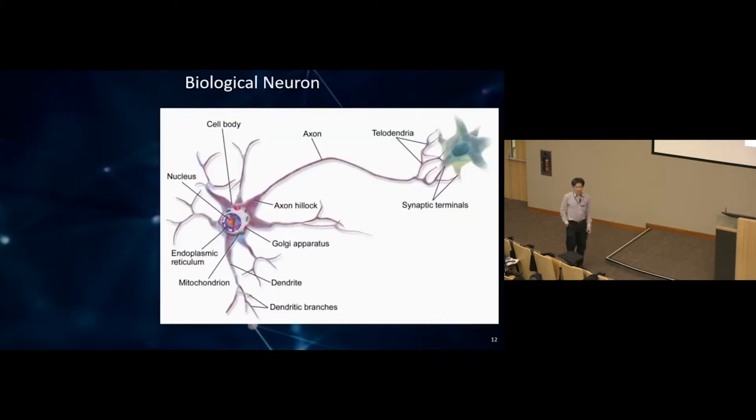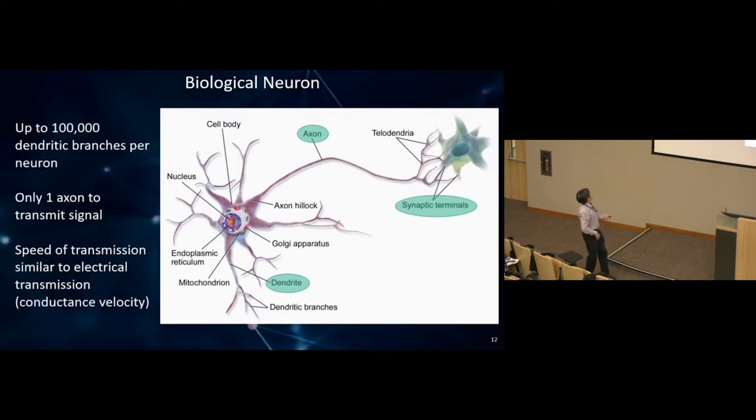So what is neural network? Let's look at the biological version of neurons. This is a picture of a neuron, and we have lots in our brain. There are three components: the dendrite, which can have up to 100,000 going into one neuron; the axon, with only one linking to the next neural network; and the synapsis terminal.